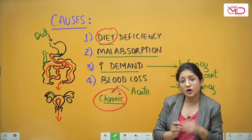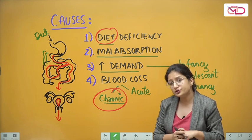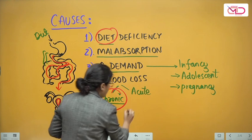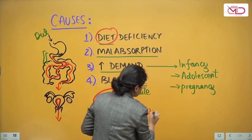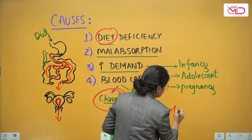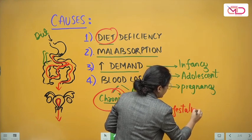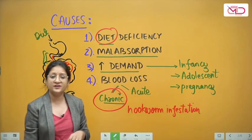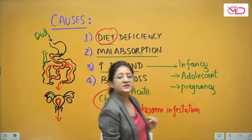In lower-income countries and lower socioeconomic strata, hookworm infestation is a very important cause that can lead to chronic blood loss from the GI tract. Broadly, these are the causes to consider when evaluating any patient with iron deficiency anemia.